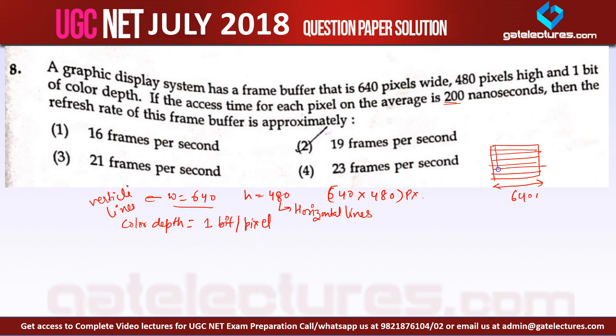640 means if you count the number of vertical lines here. This is vertical line number 1, 2, 3, 4, 5, 6 and so on. The total vertical lines will be 640. And when I am saying the height is 480 pixels, that means the total horizontal lines like 1, 2, 3, 4 and so on. These total horizontal lines are 480.